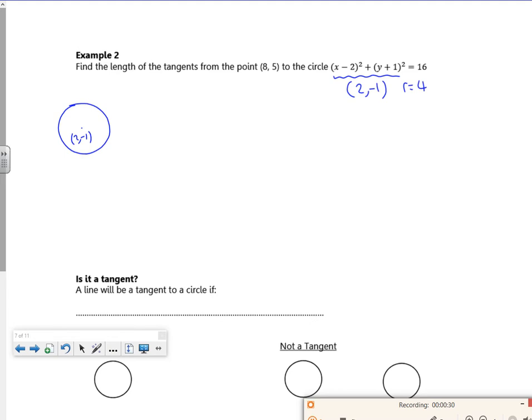Now it wants the length of the tangents from the point (8,5). So (8,5) is written up, so there's the point (8,5). I'm not going to be able to do it perfectly, but you can draw on using a ruler, touching and going through the point.